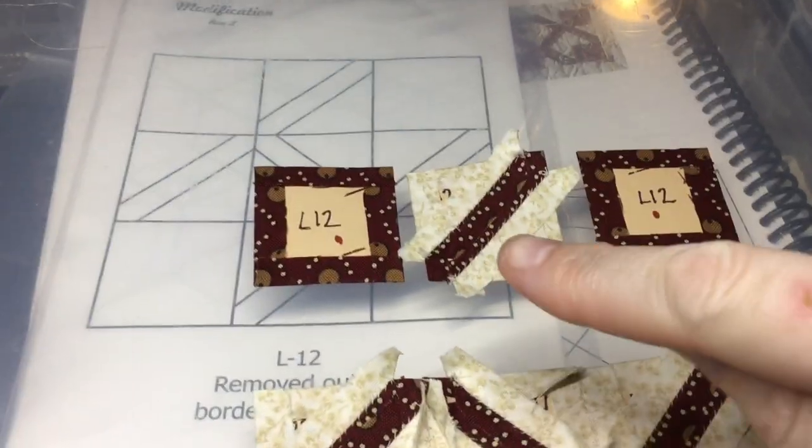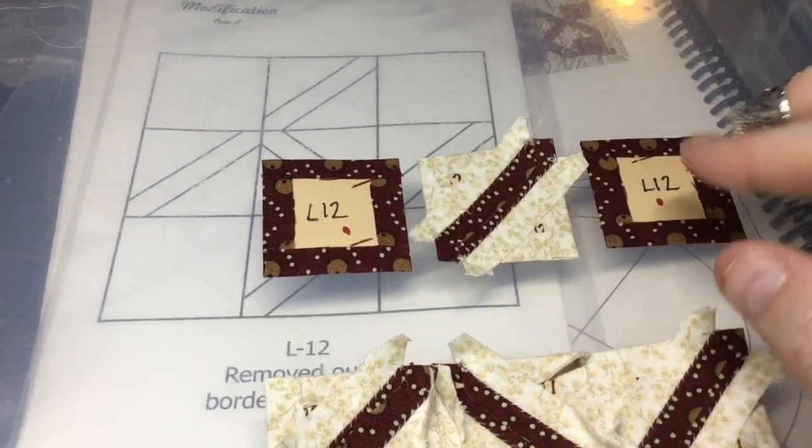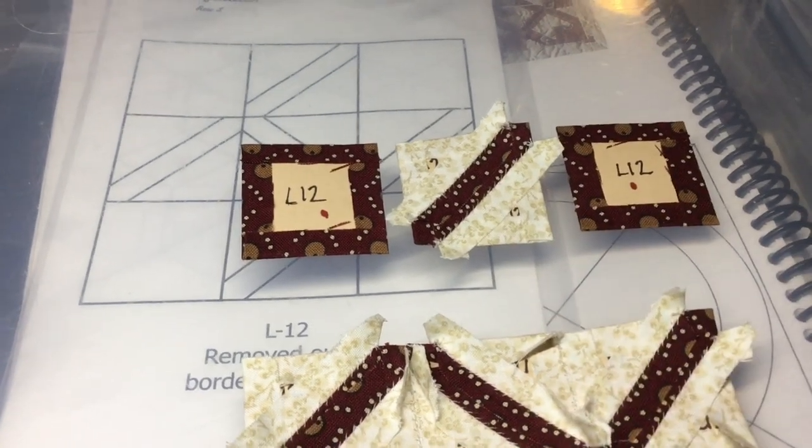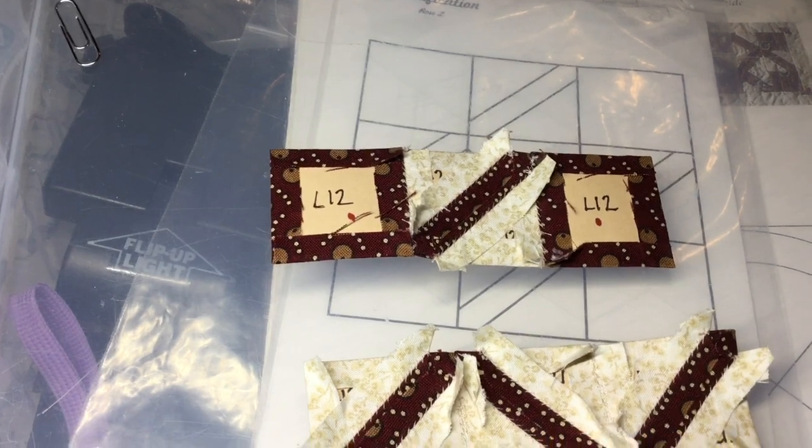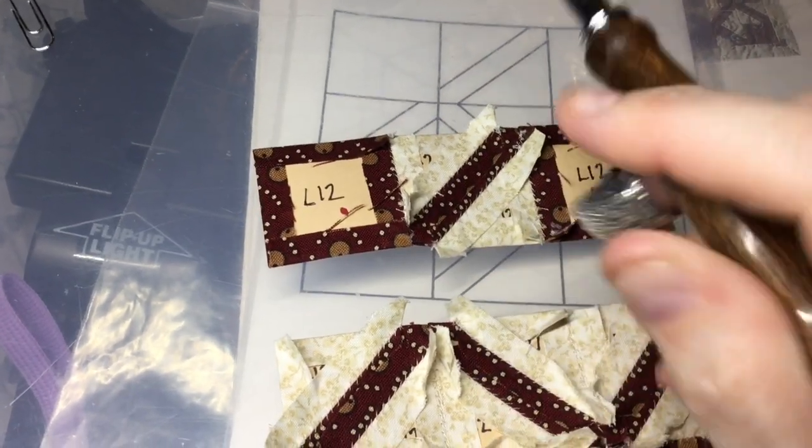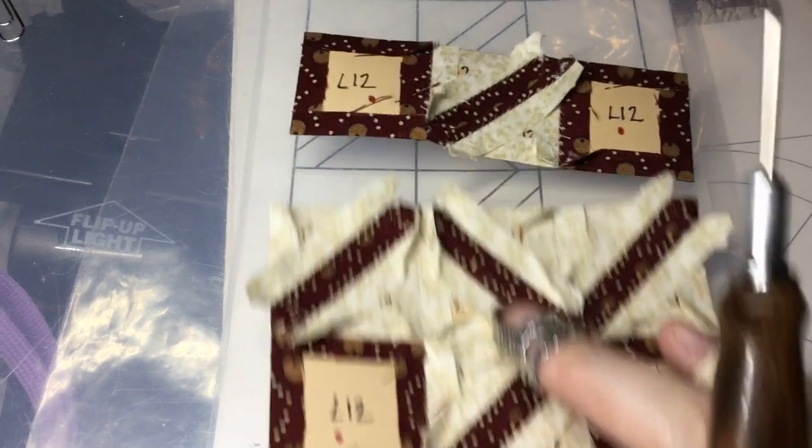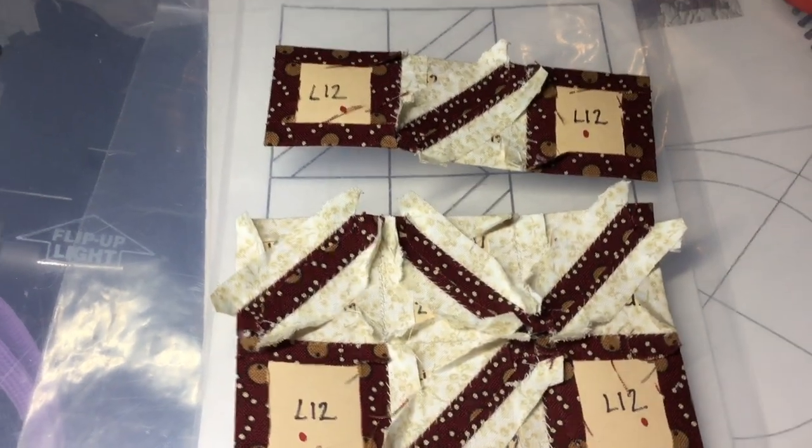So I've assembled and basted the top three squares, and now I will form it into the row.